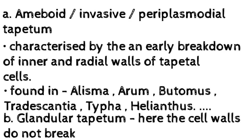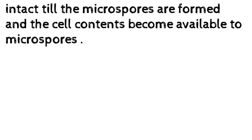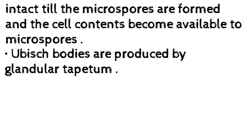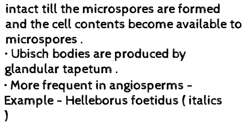B. Glandular tapetum — here the cell walls do not break and they remain intact till the microspores are formed, and the cell contents become available to the microspores. Ubisch bodies are produced by glandular tapetum. More frequent in angiosperms. Example: Helleborus, Photinus italics.